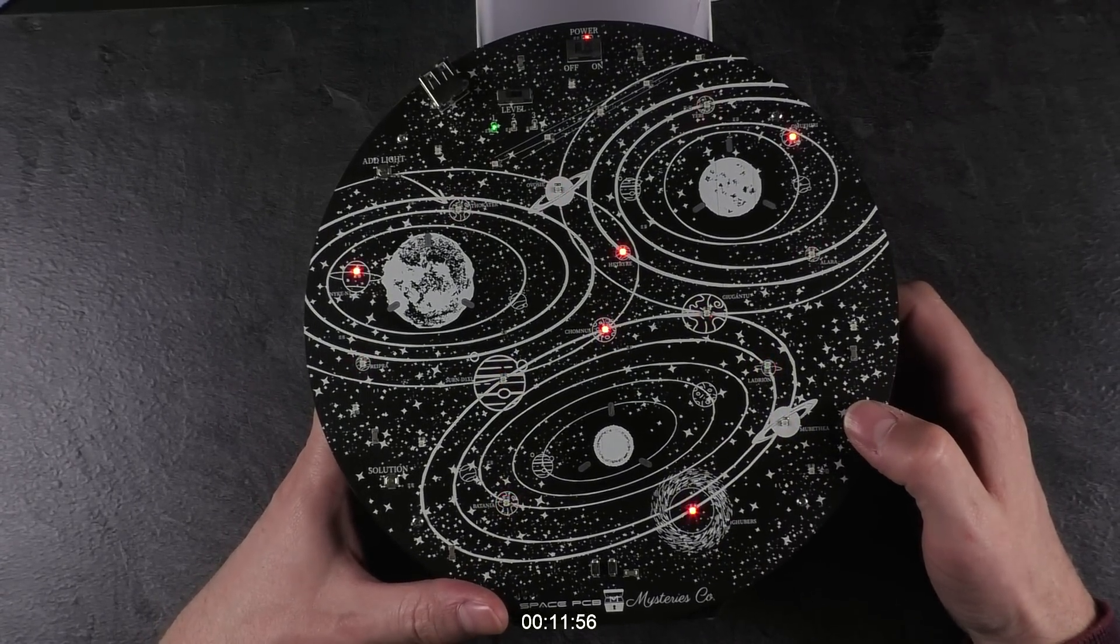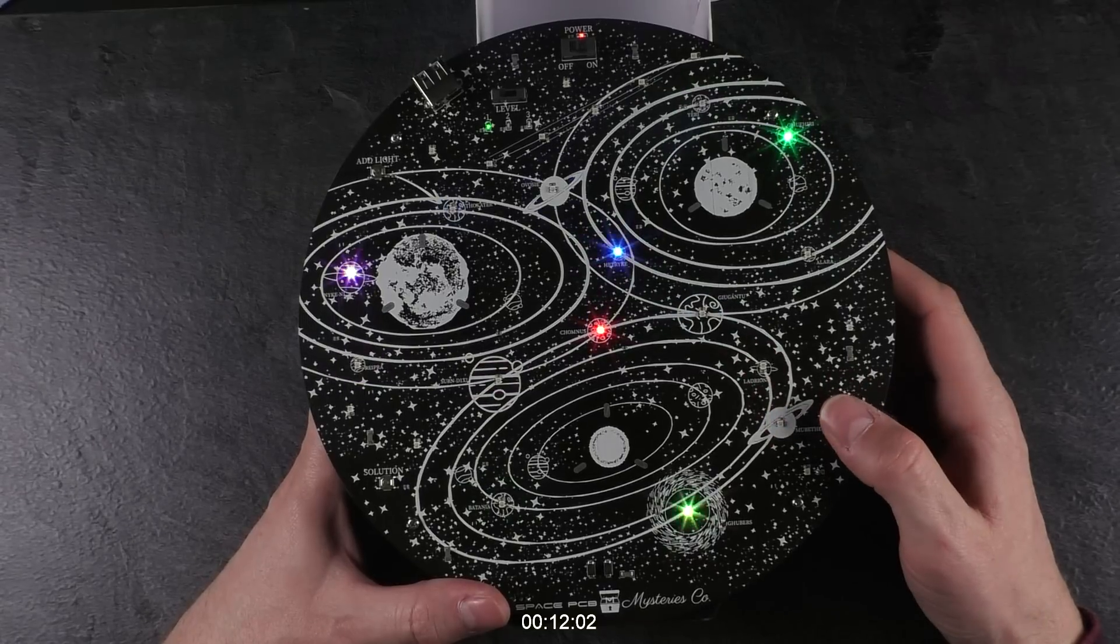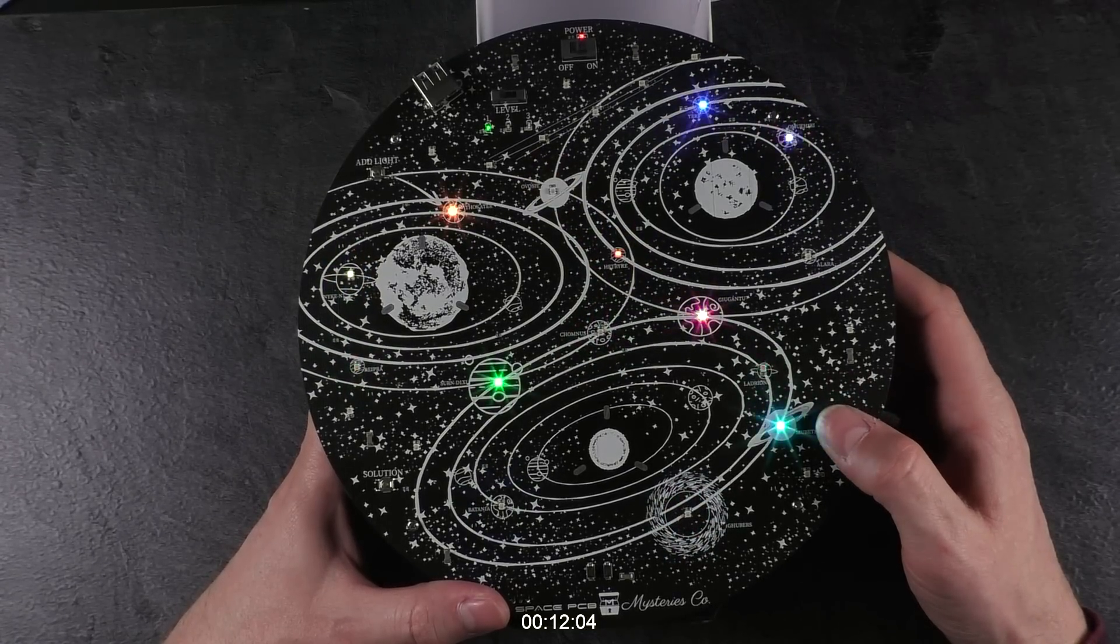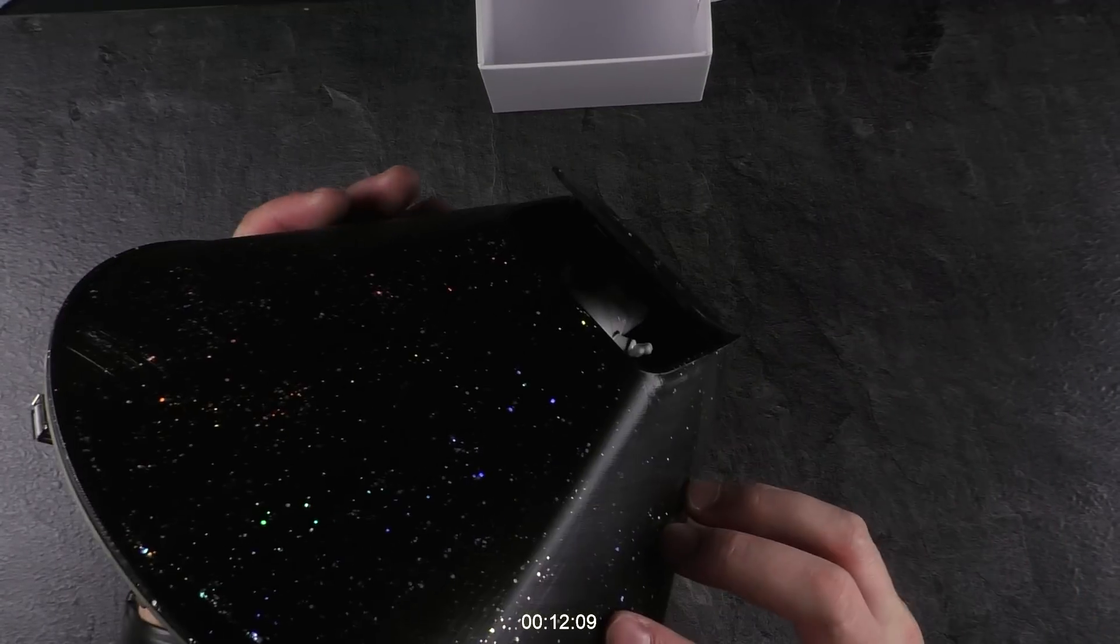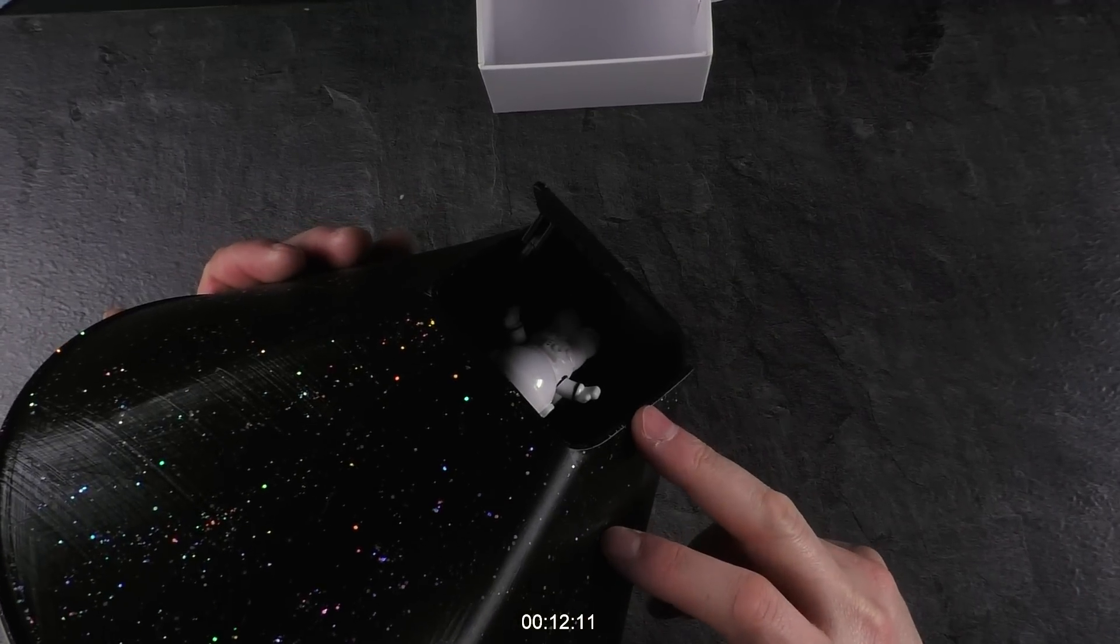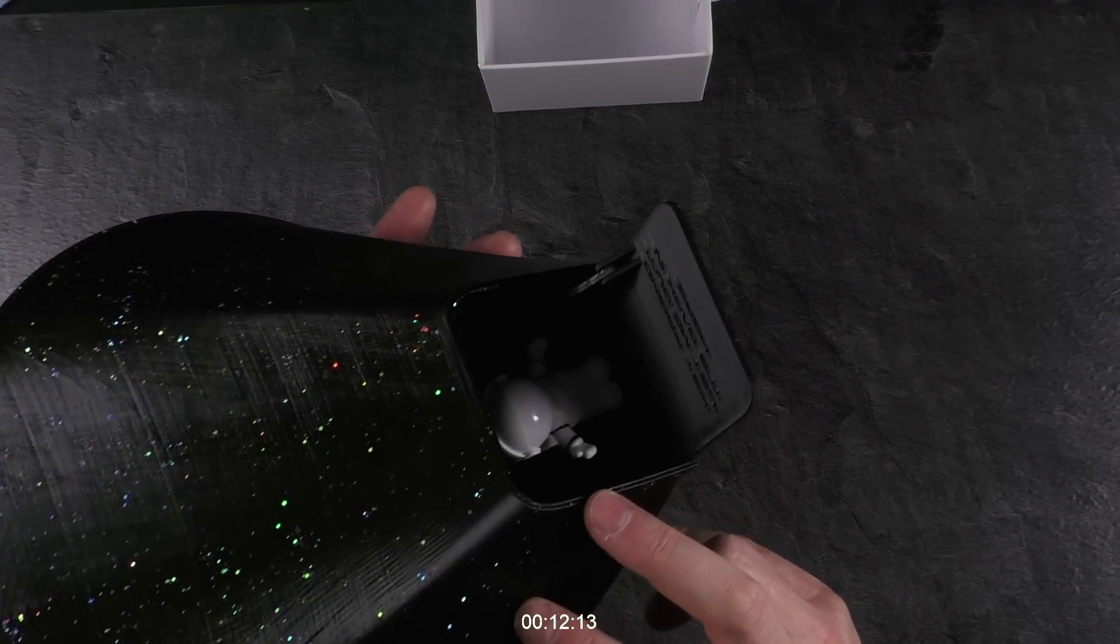And every time you solve a stage this nice animation appears, telling you you did something right. Making some nice fireworks, showing what colors are available. So maybe the puzzle would have also been possible with more colors. And then in the end this secret compartment back here is opening.